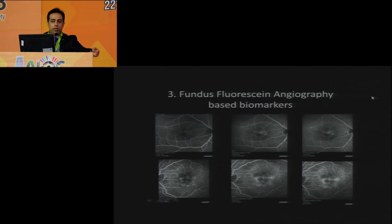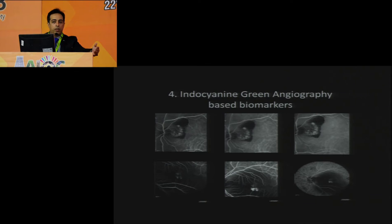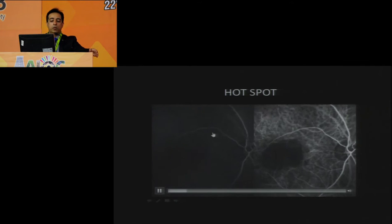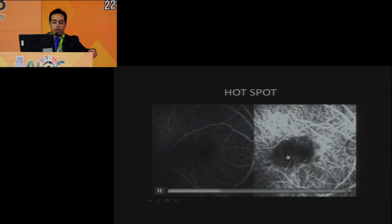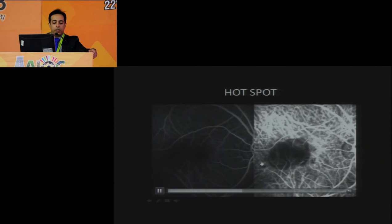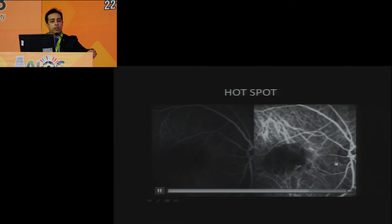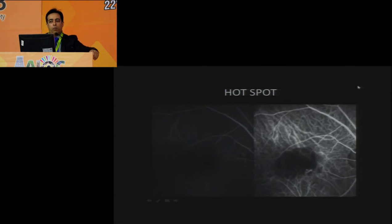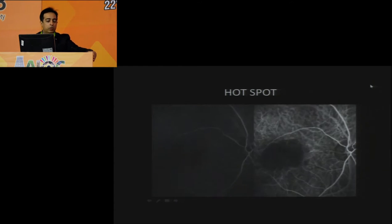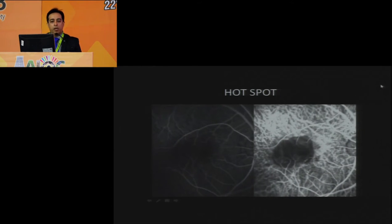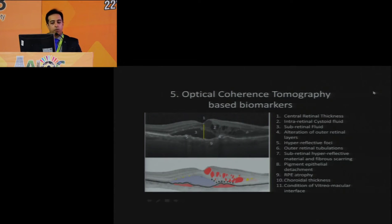Fluorescein and ICG angiography have specific interpretations — where is the active leak, where is the recurrence, and what is the predictive outcome of the lesion. A combination of fluorescein and ICG is used when blood is masking the central area, to look for a hot spot or feeder vessel channel on ICG, helping establish diagnosis and predict progression.